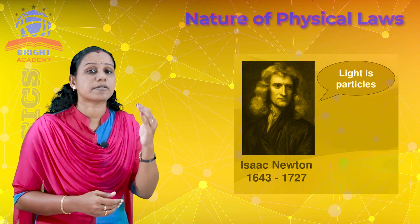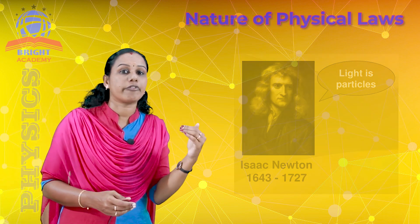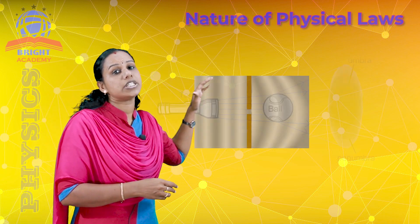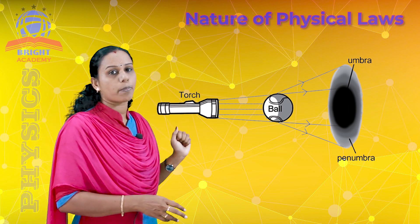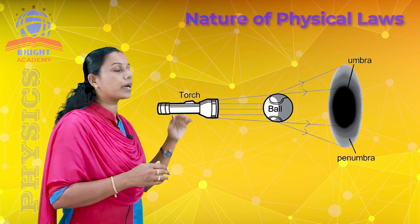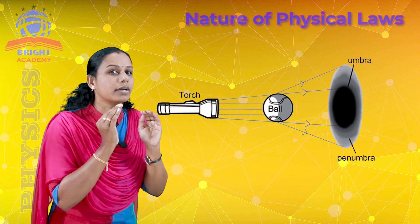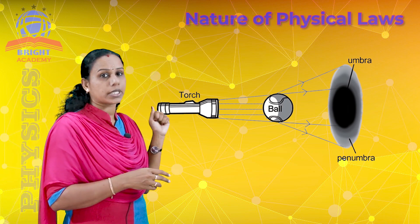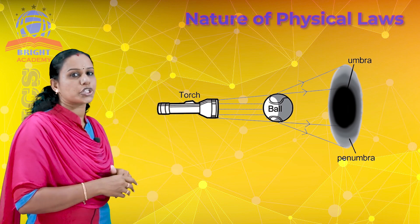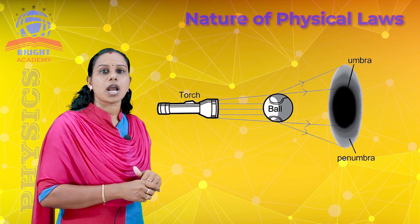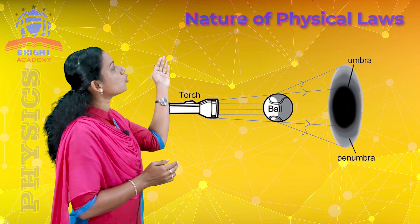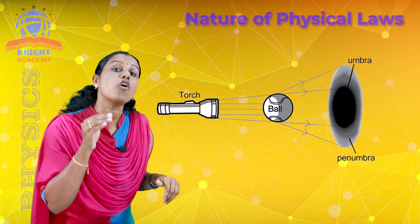Newton's corpuscular theory was not sufficient to explain diffraction and interference. Diffraction is the bending of light around sharp edges — when a shadow of an obstacle is formed at the edge. Newton's theory assumed straight-line propagation; if there is an obstacle to the light, Newton's theory would be satisfied. But it failed to explain the bending of light around sharp edges.